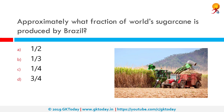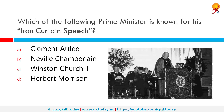Approximately what fraction of the world's sugarcane is produced by Brazil? The correct answer is one-third. Brazil produces 25 percent of the world's sugar and ethanol. Sugarcane contributes to 80 percent of the sugar produced worldwide.